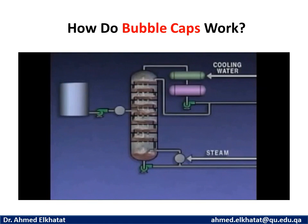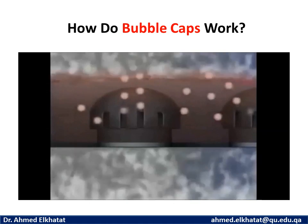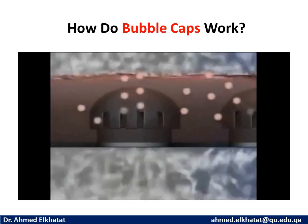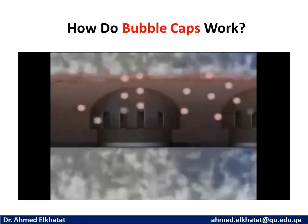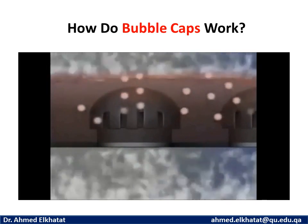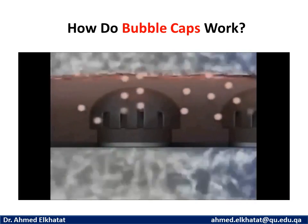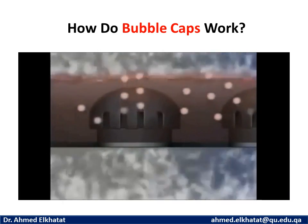Another type of tray uses bubble caps. The holes in each tray are covered with caps called bubble caps. The slots in these bubble caps disperse the rising vapors through the liquid on the tray. Each bubble cap has many slots, and each tray has many bubble caps to spread out the vapors, ensuring maximum contact between vapors and liquid so that maximum heat transfer can take place.